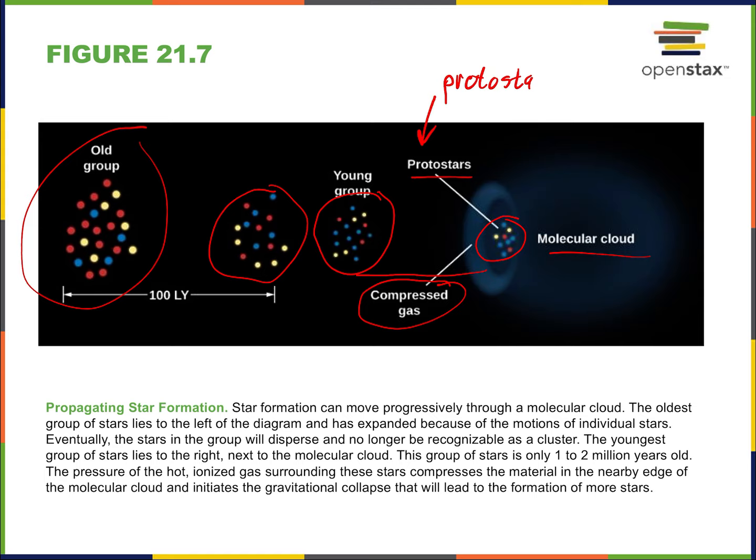Protostars become stars. Here we see star clusters forming more star clusters in a chain reaction. Maybe hundreds of millions of years ago this molecular cloud was larger, and it's been compressed one star cluster group after another, collapsing like a domino effect into more stars.